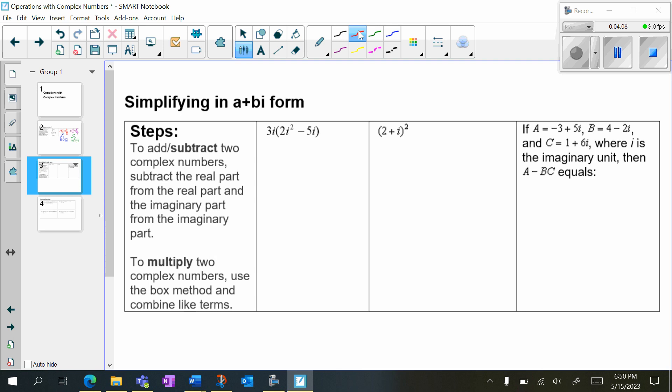So I have the first question, 3i times 2i squared minus 5i. Well, I want to use the distributive property. 3i times 2i squared and then 3i times negative 5i. So 3i times 2i squared is 6i cubed. 3i times negative 5i is negative 15i squared. But remember, i to the third is really negative i. So that's 6 times negative i minus 15. And we know that i squared is negative 1. So what I have really here is negative 6i plus 15. And we want to put it in a plus bi form. So our constant is going to go first, 15 minus 6i.